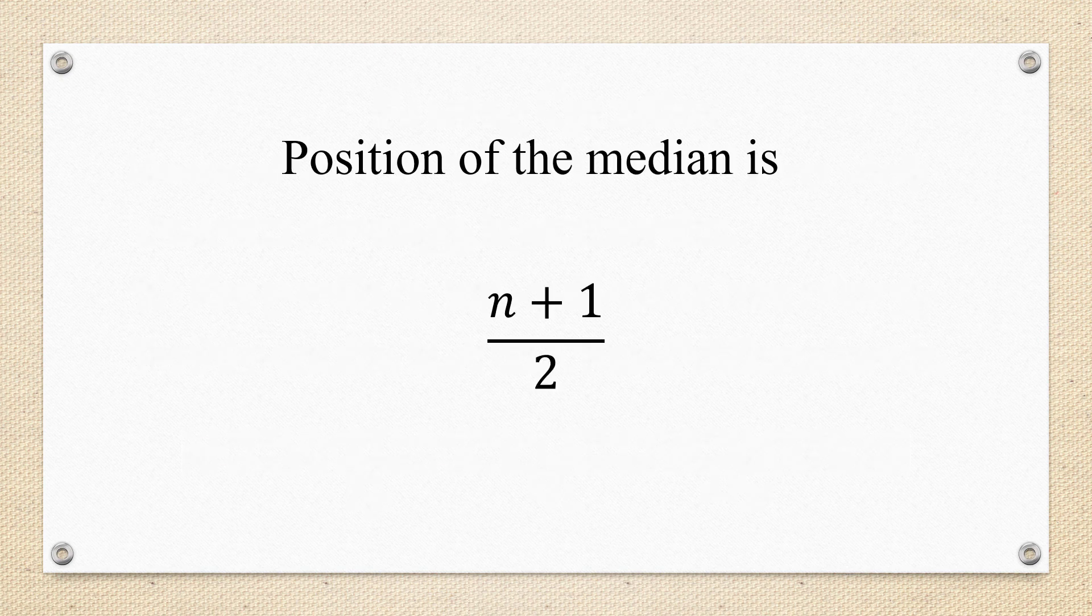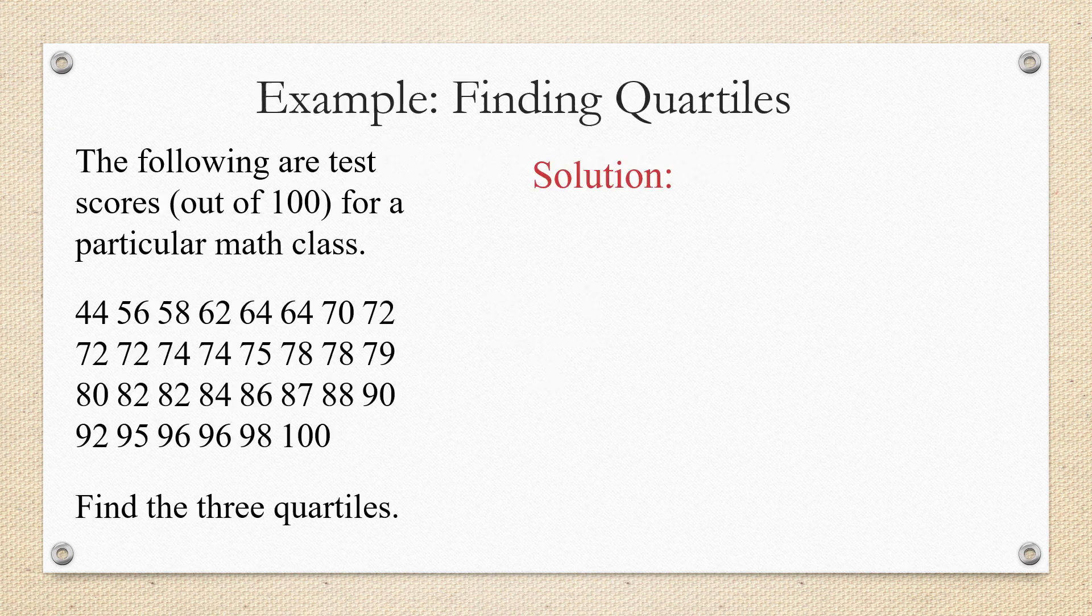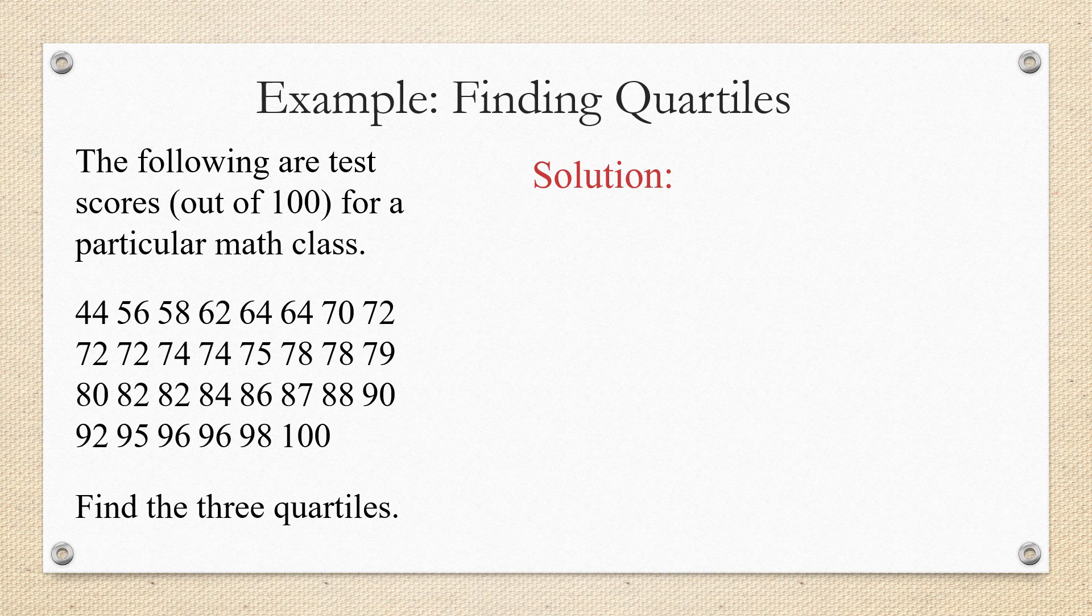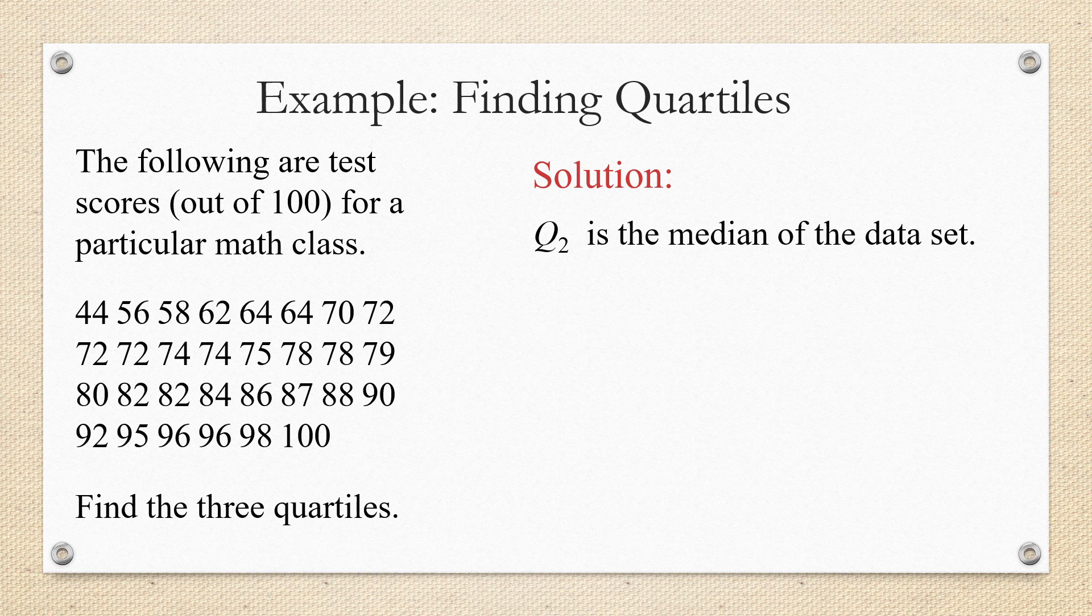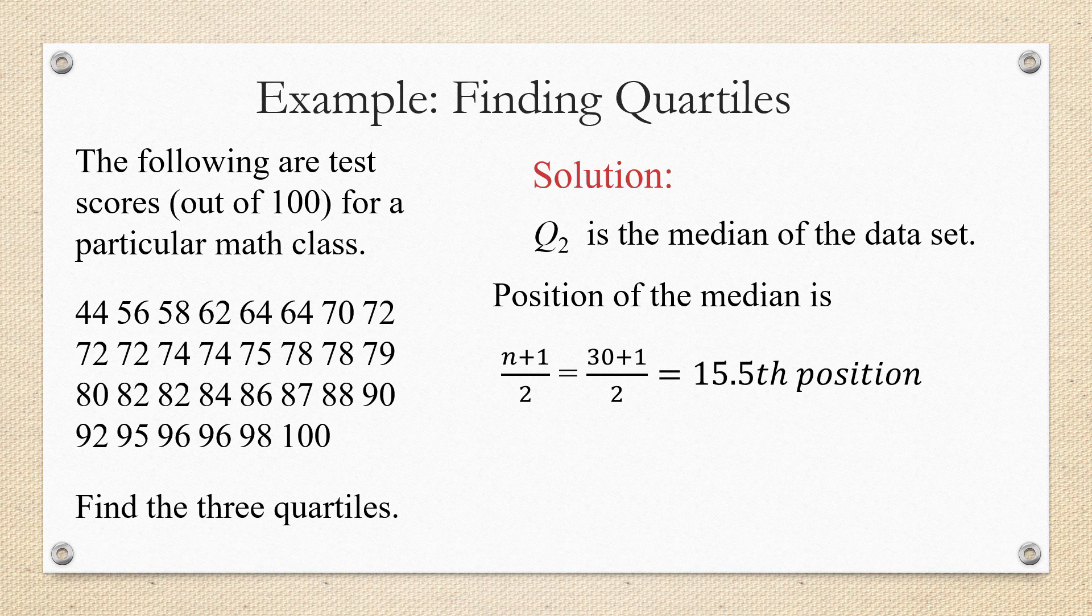Although we don't have a formula for the median of a data set, we know that the position of the median is always n plus one over two, where n is the number of data values in the set. So for example, if we wanted to find the three quartiles for 30 scores on a particular math test, we could start by finding Q2, which is the median of the entire set. We would do this by determining the position of Q2, n plus one over two. Since there are 30 data values in the set, 30 plus one over two is 15.5 or 15 and a half position.